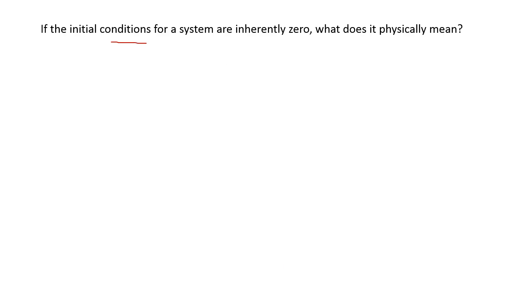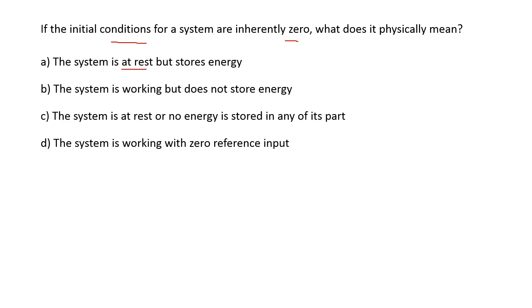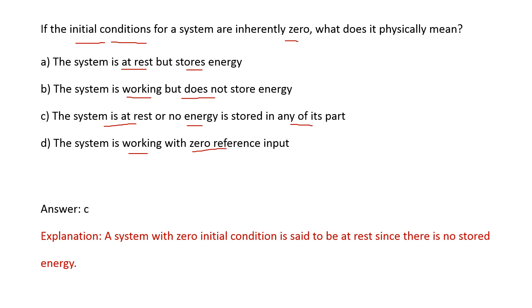Next: if the initial conditions for a system are zero, what does it physically mean? Options are: the system is at rest but stores energy; the system is working but does not store energy; the system is at rest and no energy is stored in any of its parts; the system is working with zero reference input. Initial conditions of zero means the system is at rest and there is no stored energy. So option C is the right answer.